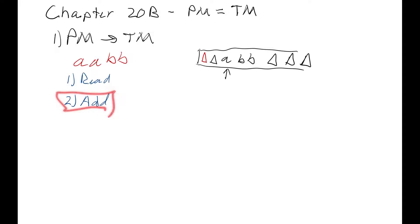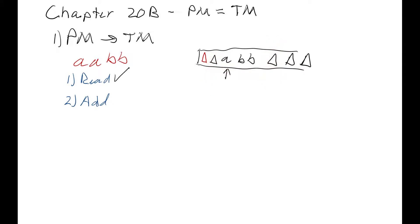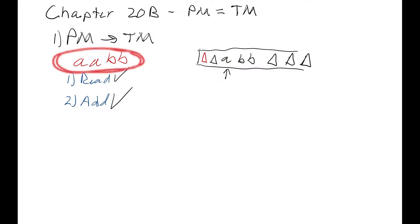When the POST machine executes the add operation, the Turing machine converts those into states that move the tape head down to the very last blank, then replace that blank with whatever character we want to add. Then we move the tape head back until we find a blank on the front and restore it to where it was before. So we have our read and add operations — converting a POST machine to a Turing machine was actually pretty easy.